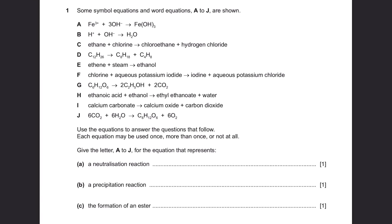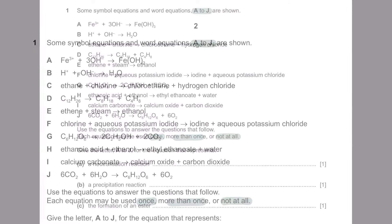Question 1. Some symbol equations and word equations A to J are shown. Use the equations to answer the questions that follow. Each equation may be used once, more than once, or not at all.